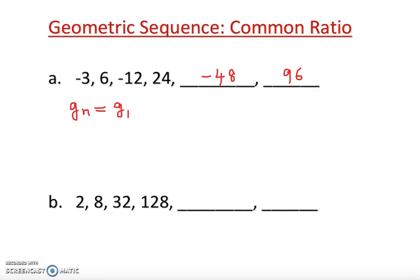The general term is: z_n = z1 · r^(n−1). This is the same as a_n = a1 · r^(n−1) — it's the same formula. I'm naming it with 'z' because this represents my geometric sequence, so I'm referring to it as 'g' for geometric.